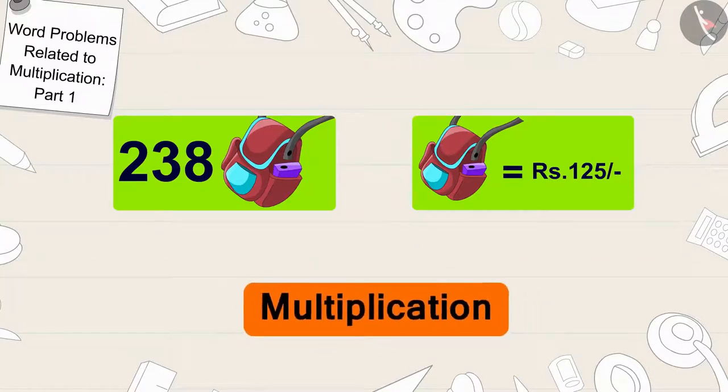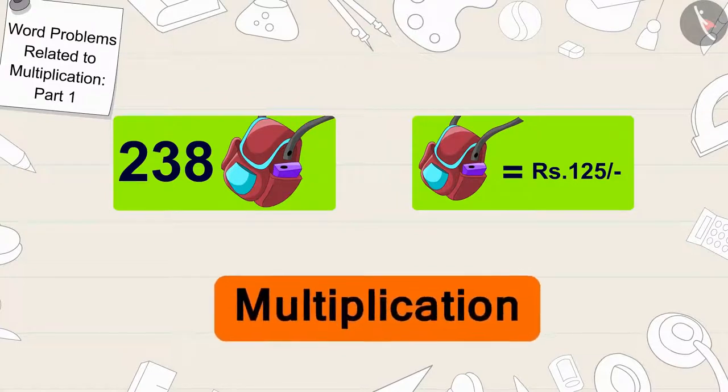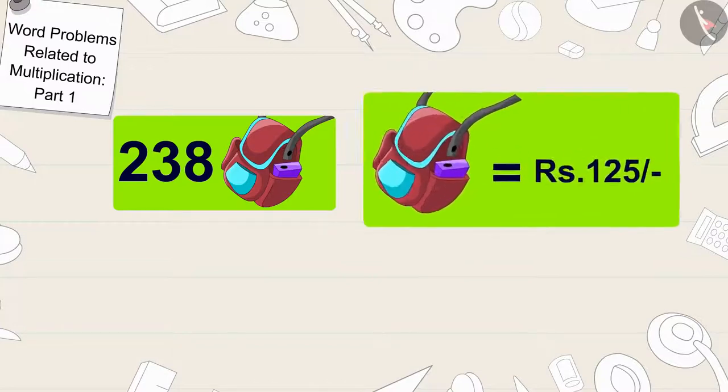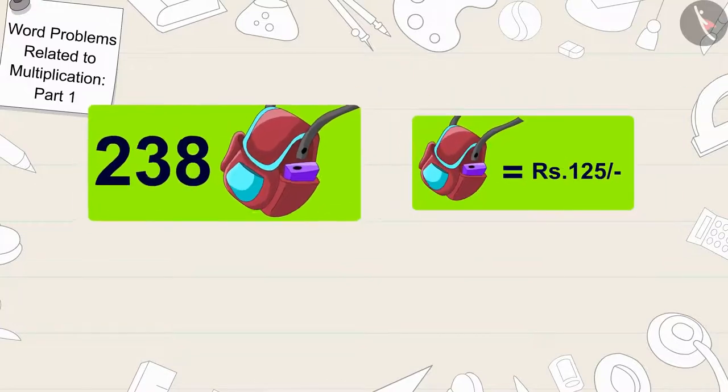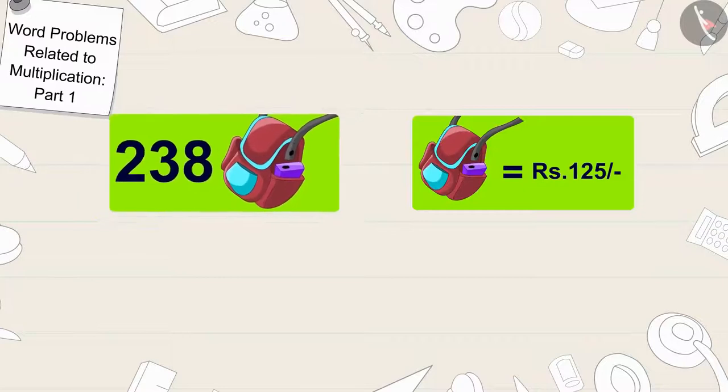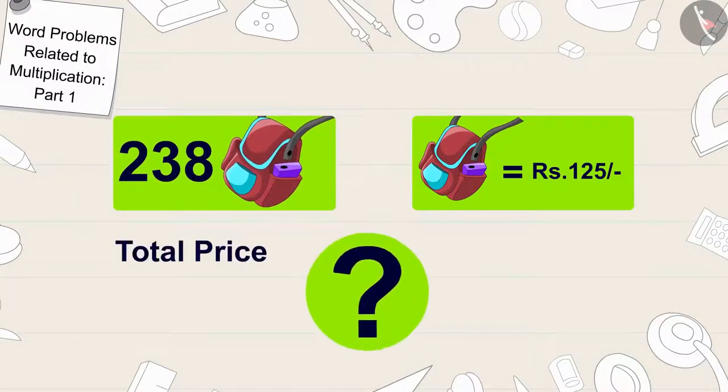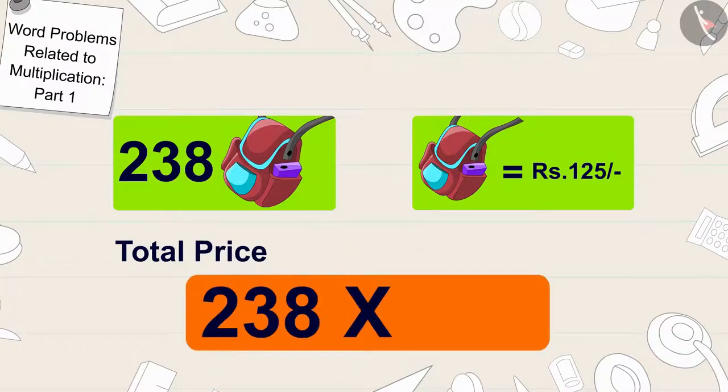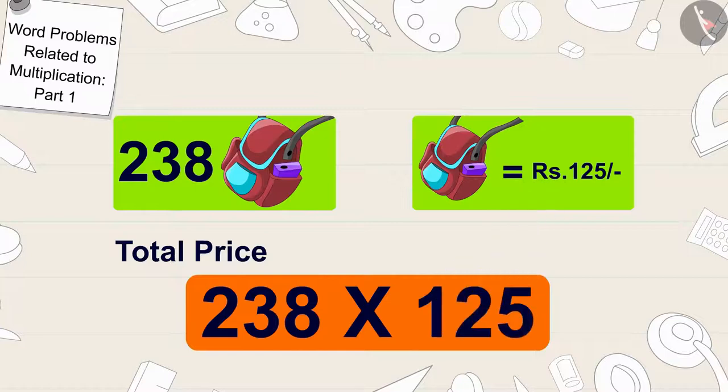the process of multiplication. The cost of one bag here is 125 rupees and we have to find out the total price of 238 bags. So, we will multiply 238 by 125.